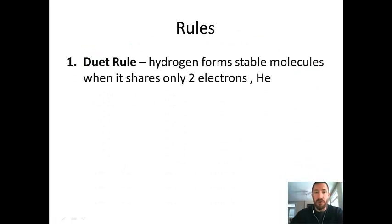So some rules. First, the only atom that will follow this rule will be hydrogen. It's called the duet rule. Hydrogen forms stable molecules when it shares two electrons. Most things need 8, but hydrogen's happy with 2. That's simply because hydrogen has that 1s orbital to fill. It wants to basically become like helium.